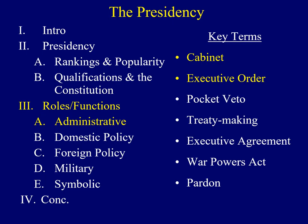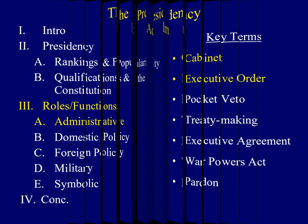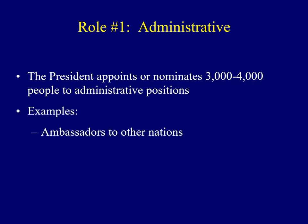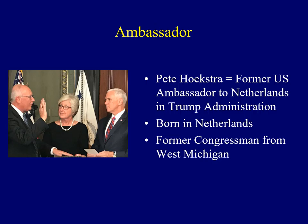The core of the lecture is next — we'll explore the five major roles or functions the president fulfills. We'll begin with the administrative function. This role is often overlooked by many. Under the administrative function, the president has the ability to appoint or nominate as many as three to four thousand people to a range of administrative positions. One example would be ambassadors to other nations.